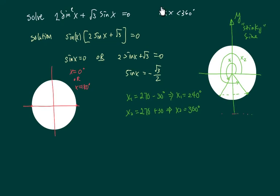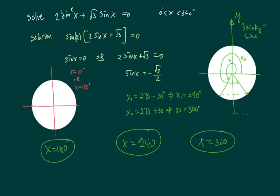Our conclusion then is x equal to 180 is one of them, x equal to 240, second one, x equal to 300 is the third one.